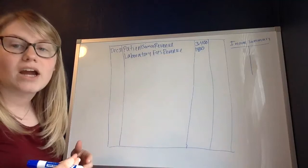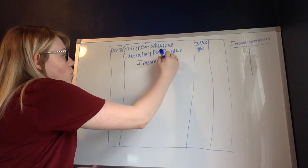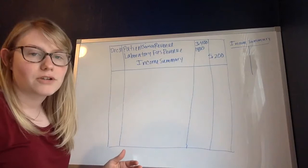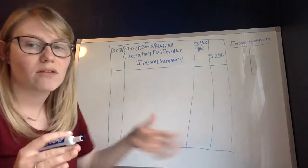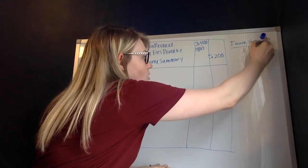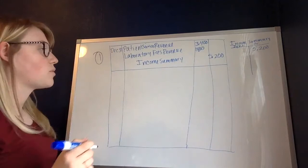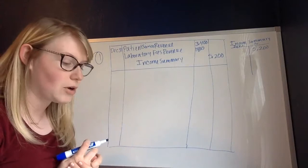We're going to total these two up and credit our income summary account. Both of our revenues equal $5,200, so that's what we're going to credit our income summary account for, and that closes our revenue accounts. I created an income summary T-account to keep track of the balances of the revenues and expenses, so on the credit side I'm going to put $5,200 to represent my revenues. This takes care of step number one — we've closed the revenue accounts by debiting the revenues and crediting the income summary.